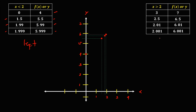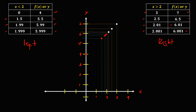For the right-side limit: x = 3, y = 7 is plotted. Then x = 2.5, y = 6.5. Then x = 2.01, y = 6.01. And x = 2.001, y = 6.001. Observe in the graph there is evidence that for the left-side limit, as x approaches positive 2, y approaches positive 6. For the right-side limit, as x approaches positive 2, y also approaches positive 6. Therefore, this limit is equal to positive 6.